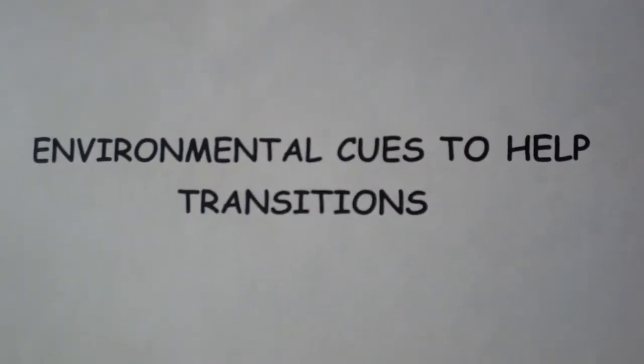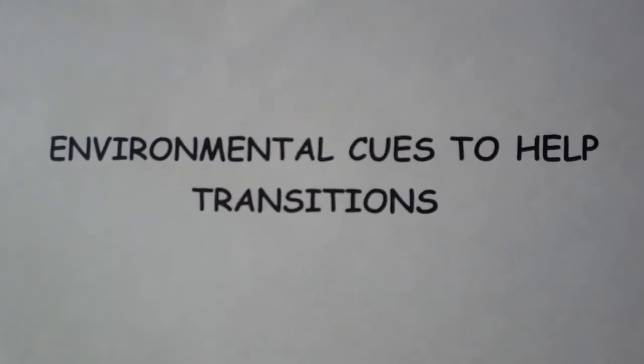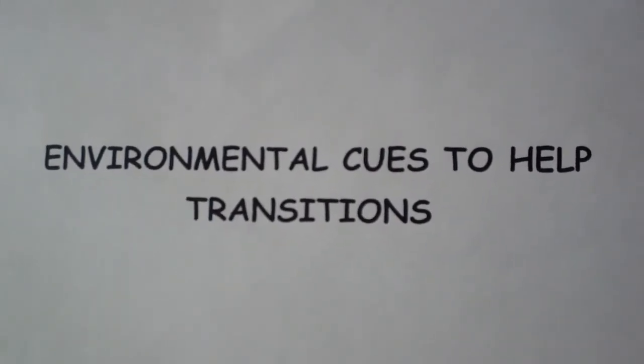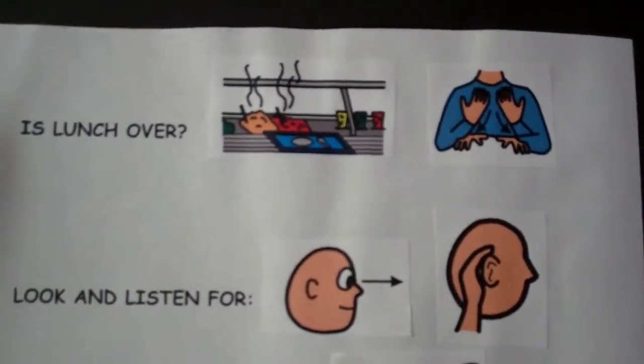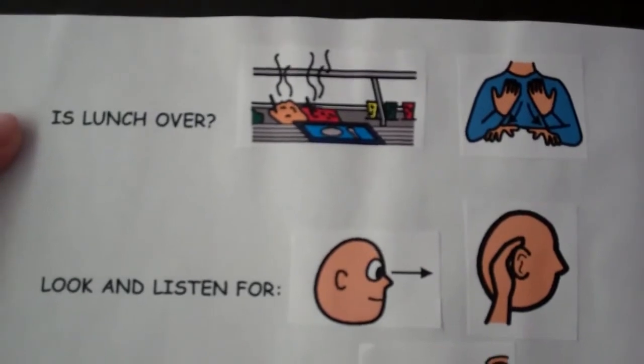Transitions can often be difficult for students with disabilities. Instead of relying on an aide or another adult to prompt them from one area to the next, teach the student how to use environmental cues to assist them in transitioning independently. Here is an example of a visual tool to help teach a middle school student with autism to leave the cafeteria on time without aide assistance.